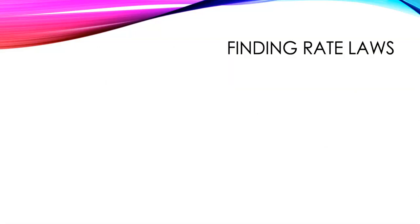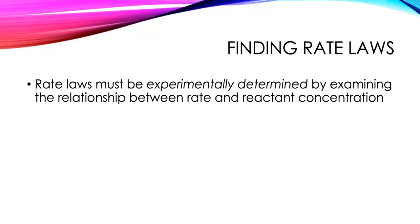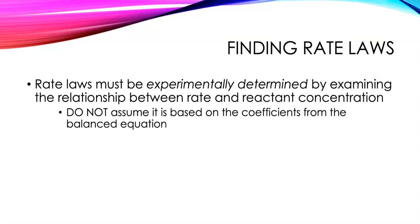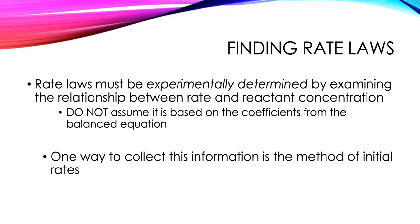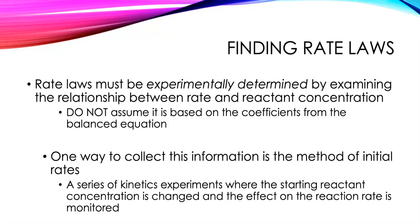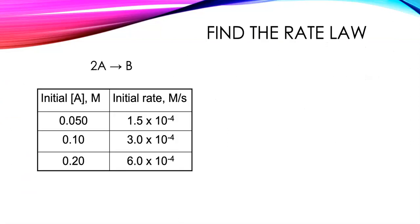So let's talk about how we can find these rate laws. We have to experimentally determine them — you cannot assume the order comes from the balanced equation, and you should not assume it's based on the stoichiometric coefficients. One way to collect the information we need is to do what's called the method of initial rates, where you do a series of kinetic experiments systematically changing the starting reactant concentration and looking at how the rate changes.